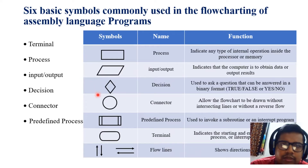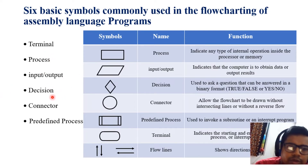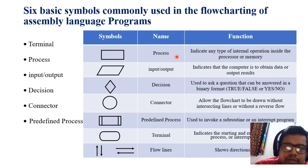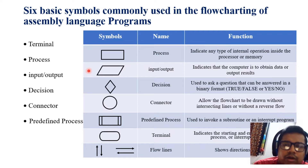Six symbols are commonly used in the flowcharting of assembly language programs. The six symbols are: terminal, process, input/output, decision, connector, and predefined process. The rectangular symbol indicates any type of internal operation inside the processor or memory. The parallelogram represents input and output — it indicates that the computer is to obtain data or output results.